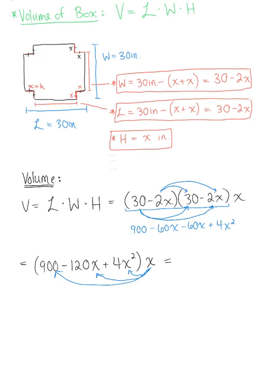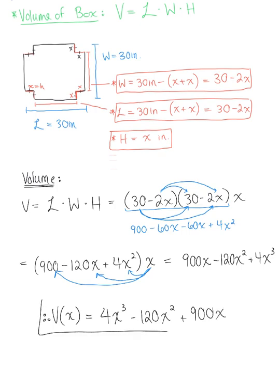We're going to distribute this x, which leaves us with 900x minus 120x squared, and then plus 4x cubed. Therefore, the volume V as a function of x is equal to 4x cubed minus 120x squared plus 900x. And that is our final answer.